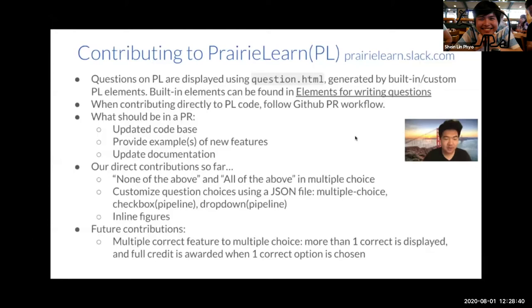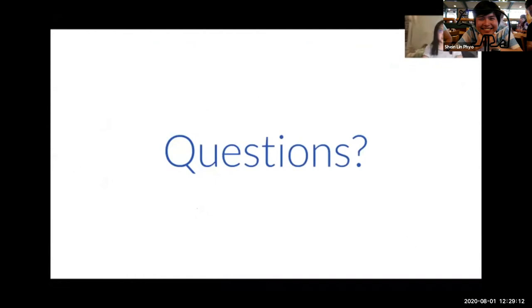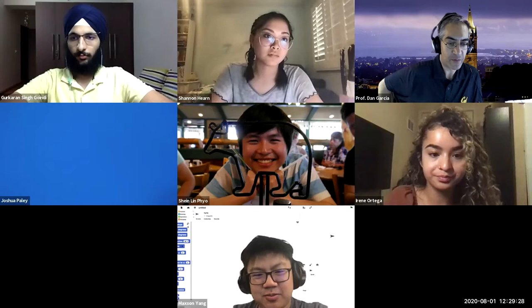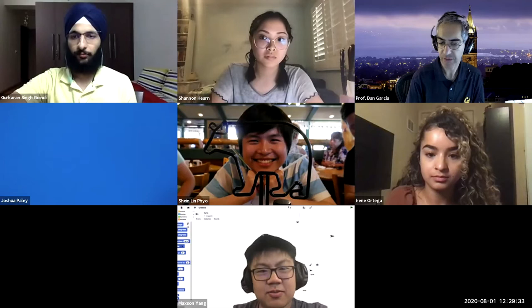Thank you all so much for watching our video and attending our panel session. We'd now like to open the floor to any questions. Before we move on, there was a question asked about generating SNAP questions in code. When you export a SNAP file with your custom blocks, it comes out in XML. Within that XML you can edit certain fields, which if you import back into SNAP will display your question. You would generalize some of these fields and then use a Python program to enter different values, essentially creating a new question.